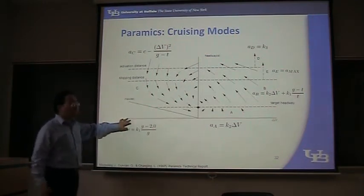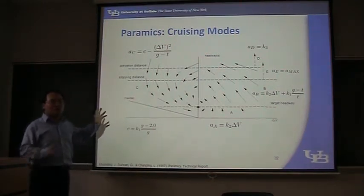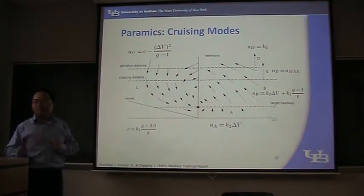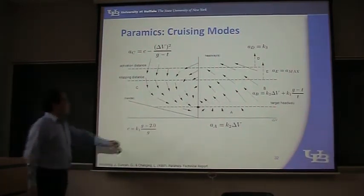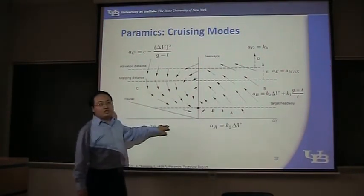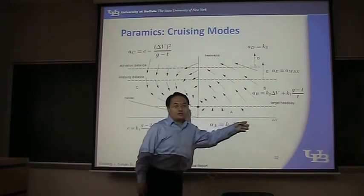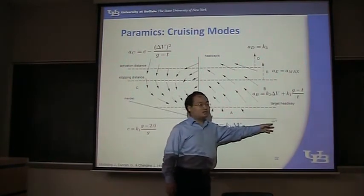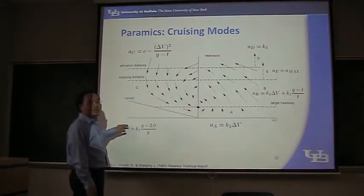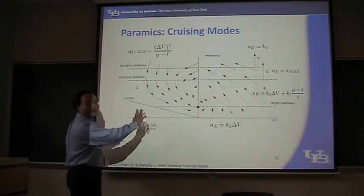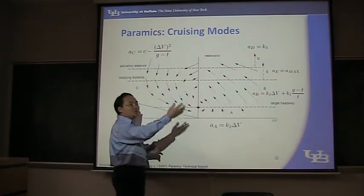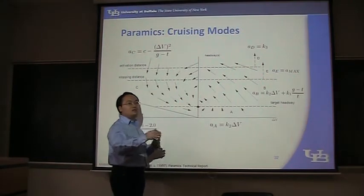Now, this figure is very difficult to understand — this is the most difficult figure, and I want to explain it in detail. Similarly, this is delta V, but it's different from the figure of V-SIM. This direction means the distance increasing, this means the distance decreasing — so different directions. This delta V means the leading vehicle's speed minus the following vehicle's speed.